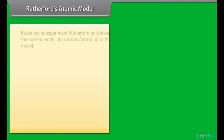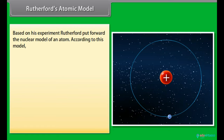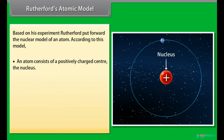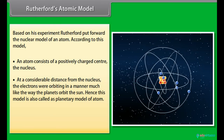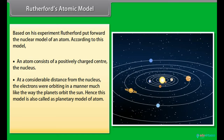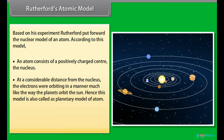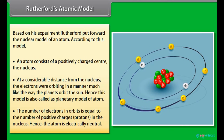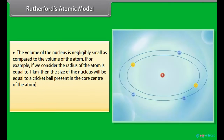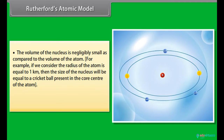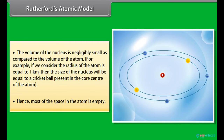Rutherford's Atomic Model: Based on his experiment, Rutherford put forward the nuclear model of an atom. According to this model, an atom consists of a positively charged center called the nucleus. At a considerable distance from the nucleus, electrons orbit in a manner much like the way planets orbit the sun — hence this model is also called the planetary model of the atom. The number of electrons in orbits equals the number of protons in the nucleus, making the atom electrically neutral. The volume of the nucleus is negligibly small compared to the volume of the atom — if the radius of the atom were 1 km, the nucleus would be the size of a cricket ball at the center.